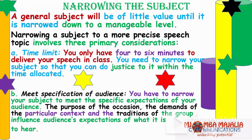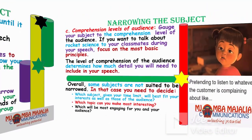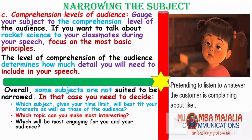So instead of talking about Taita Taveta University in general, you might say you are going to talk about the catering department, your own department, or the student welfare department. The second aspect to consider when narrowing is the specification of audience — what do the audience want to know? They might not want to know all about Taita Taveta University; maybe they mainly want to know about student welfare or how to register easily.